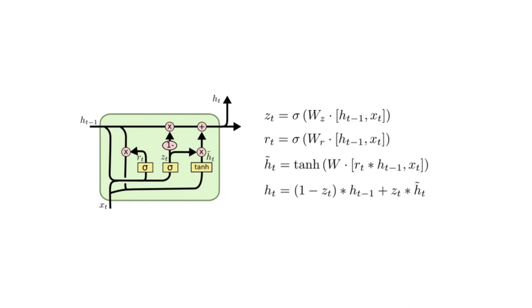For example, if you are using an RNN to create a caption describing an image, it might pick a part of an image to look at for every word it outputs. Attention isn't the only exciting thread in RNN research. For example, grid LSTMs seem extremely promising. Work using RNNs in generative models also seems very interesting. To be continued...